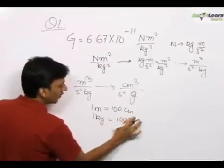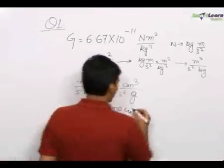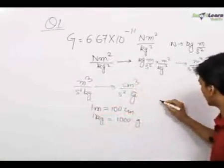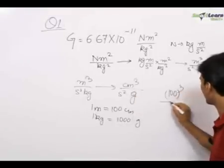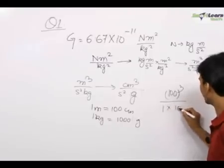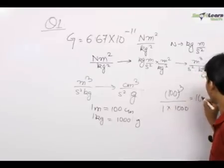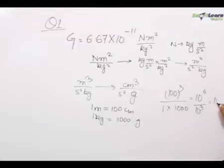When we feed in the conversion in this equation, 1 meter equals 100 centimeters, so we get 100 to the power 3 upon 1 times 1000. We get 10 to the power 6 upon 10 to the power 3, which equals 10 to the power 3.